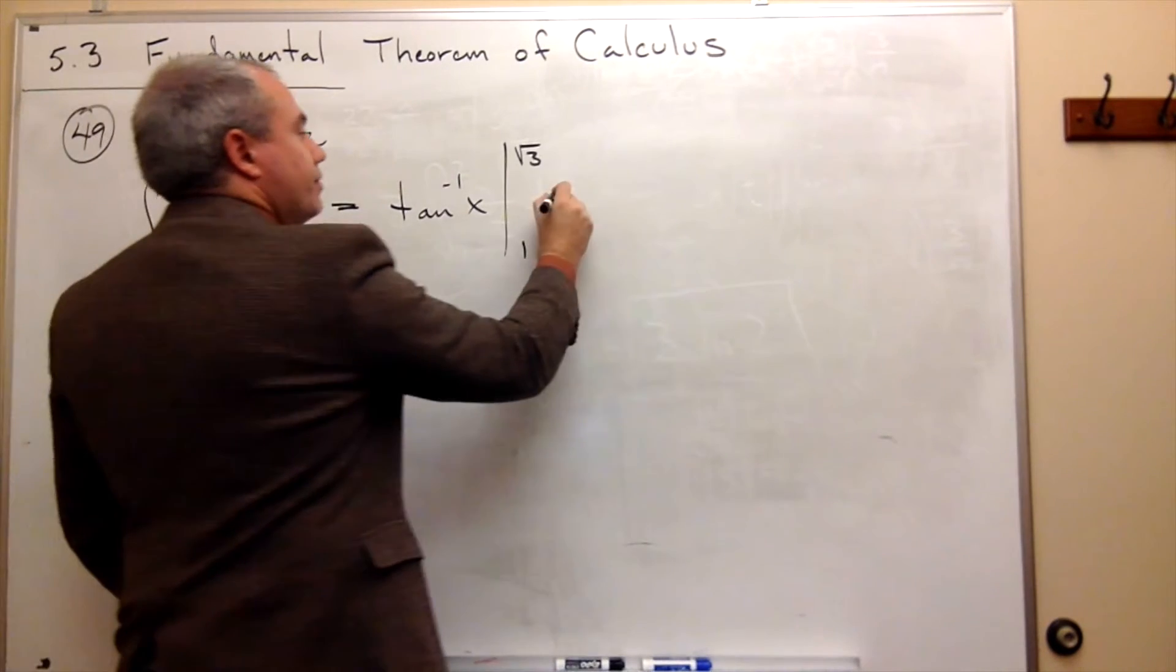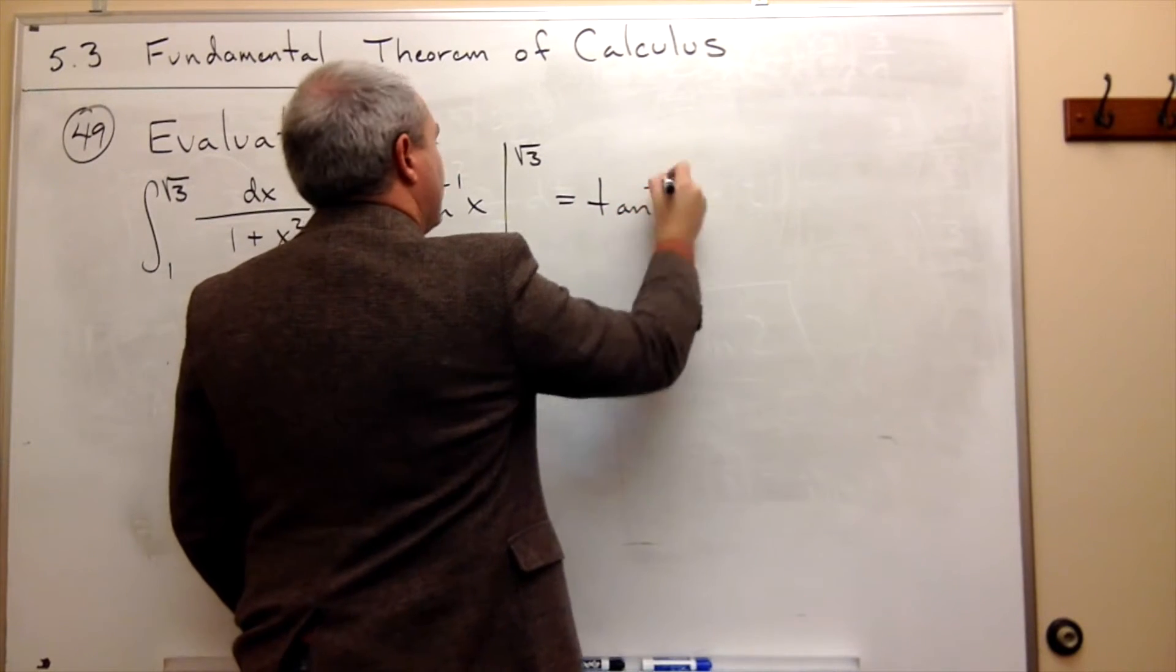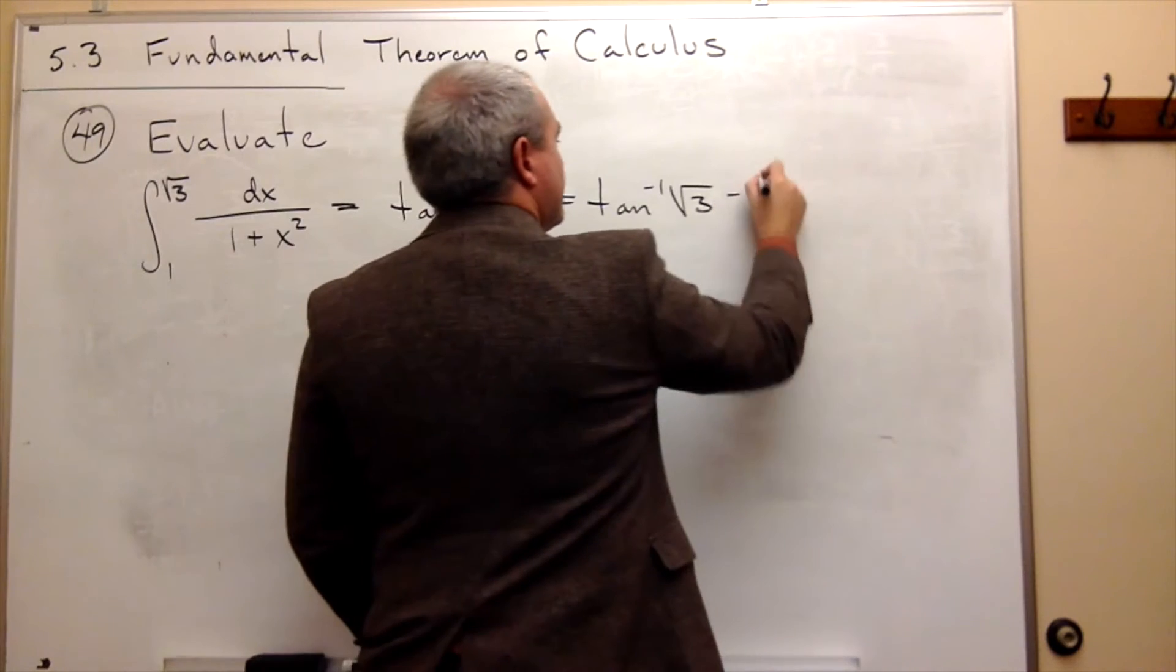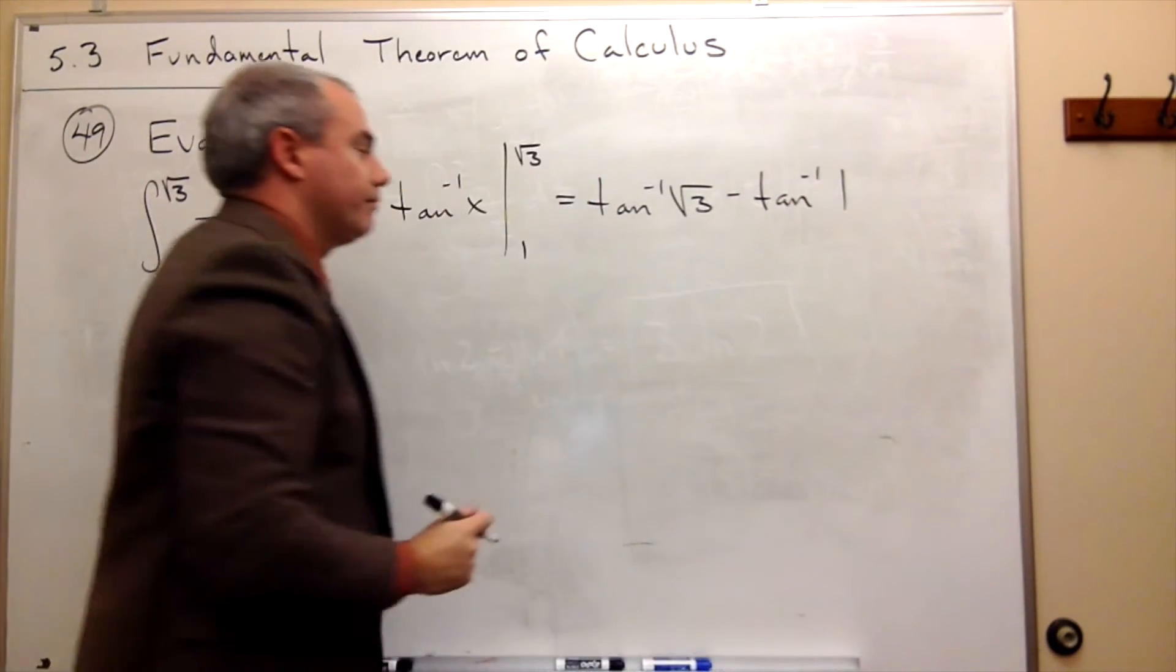Okay, so what I do next is I plug in the square root of 3. So I get tangent inverse of the square root of 3 minus tangent inverse of 1.